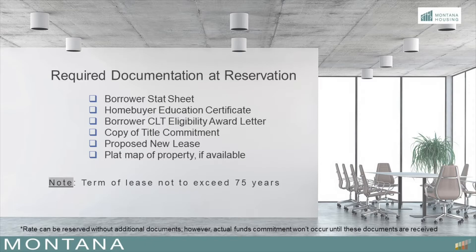A letter from the CLT confirming the eligibility of the mortgagers for the program. A copy of the title commitment must be provided along with a copy of the plat map of the property. And finally, a copy of the proposed new lease based upon either the National Community Land Trust Network 2011 CLT Network model ground lease or the Institute for Community Economics model ground lease.